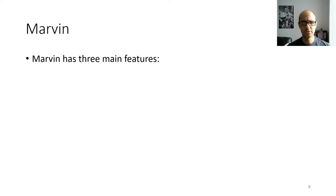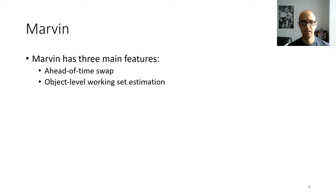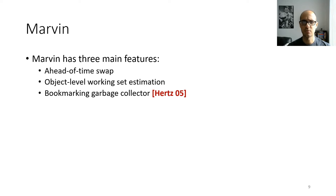Marvin does so with three main features. The first is that it checkpoints unused memory to disk ahead of time so that allocations can happen more quickly. Marvin also performs working set estimation and swapping at the object granularity rather than the page granularity. And finally, Marvin has a swap-aware garbage collector, which you can think of as a modified version of the bookmarking garbage collector from PLDI 2005.